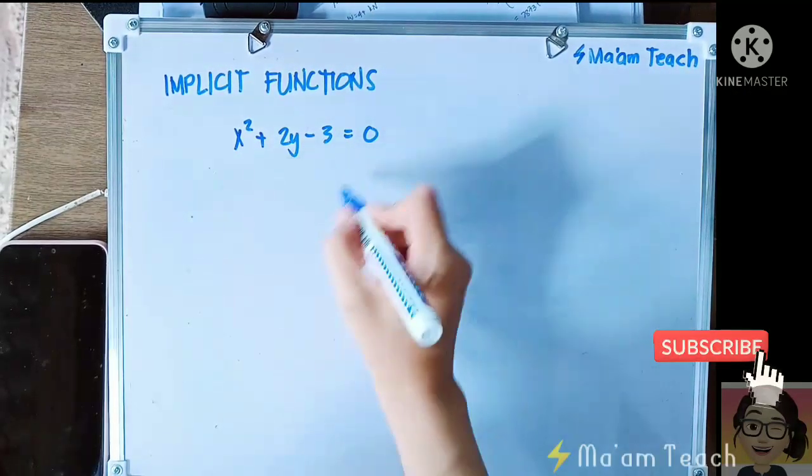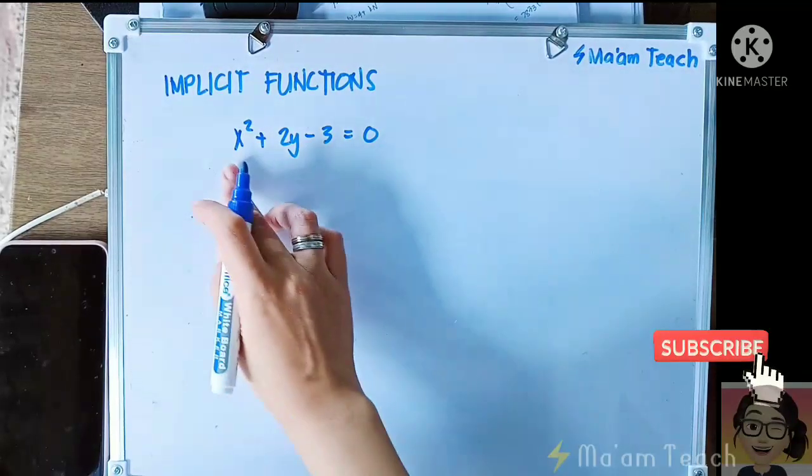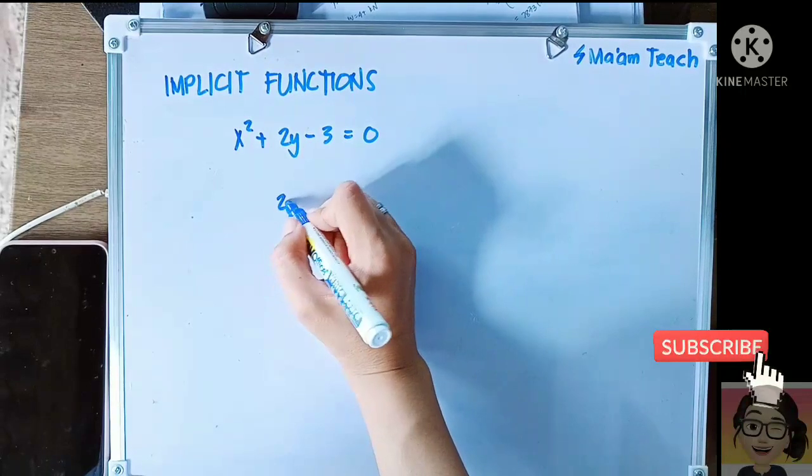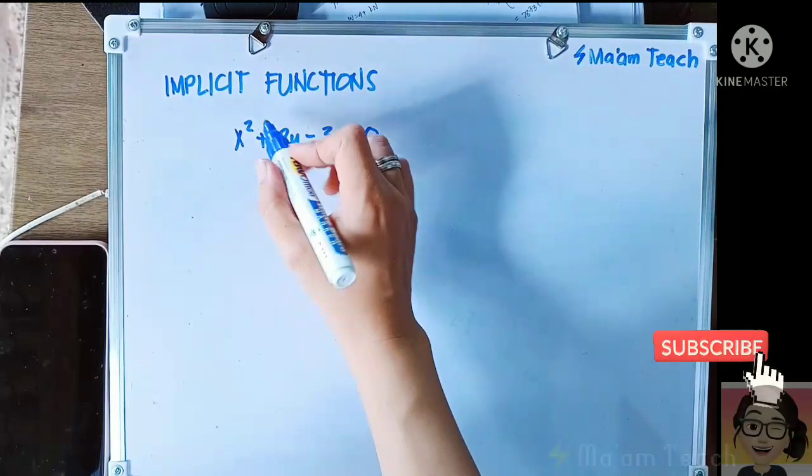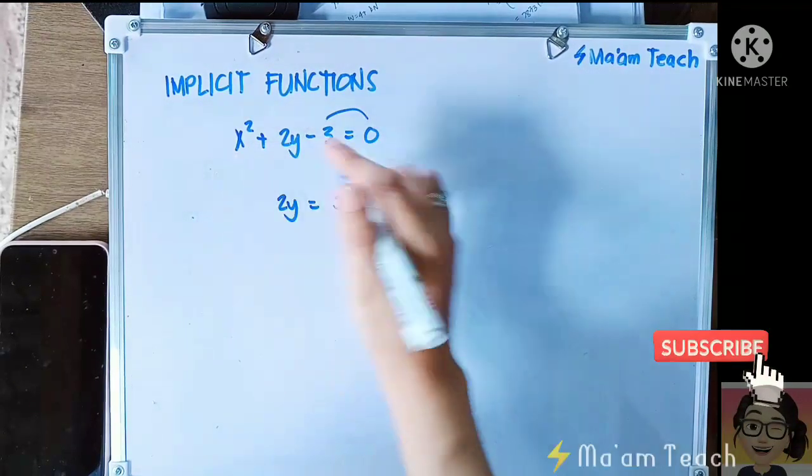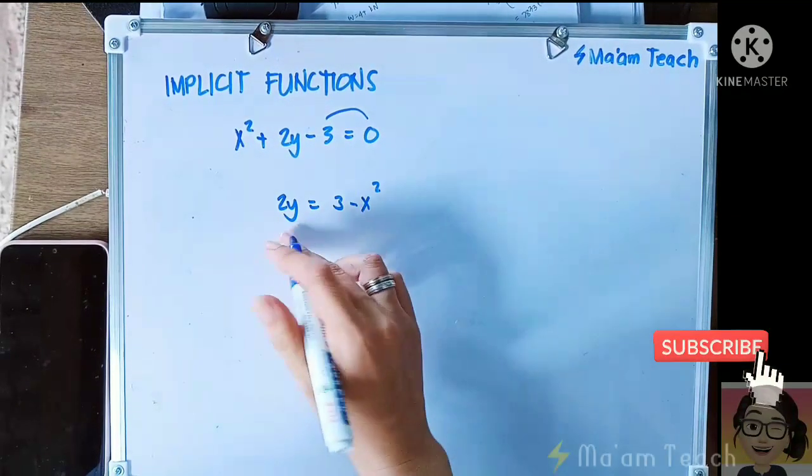By solving y, you'll have let's say 2y equals, if you transpose this to the right, you'll have positive 3 and then minus x squared. So you'll have y is equal to 3 minus x squared all over 2.